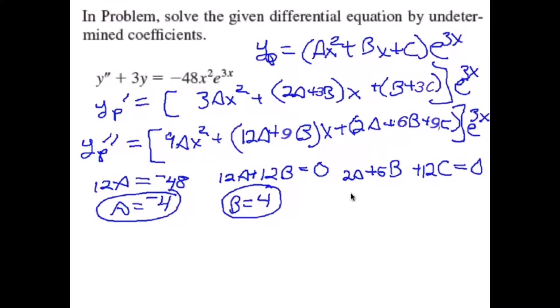So 2A is negative 8 plus 6 times 4 is 24, giving us 12B. Then 2A is negative 8 plus 6 times 4 is 24 plus 12C equals 0. That just gives us that C is negative 4 thirds.